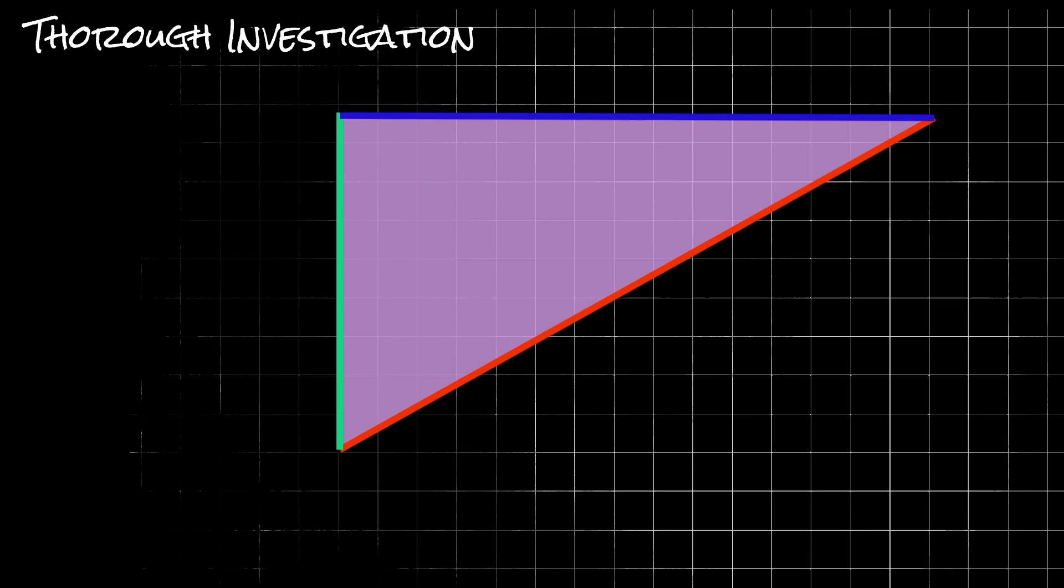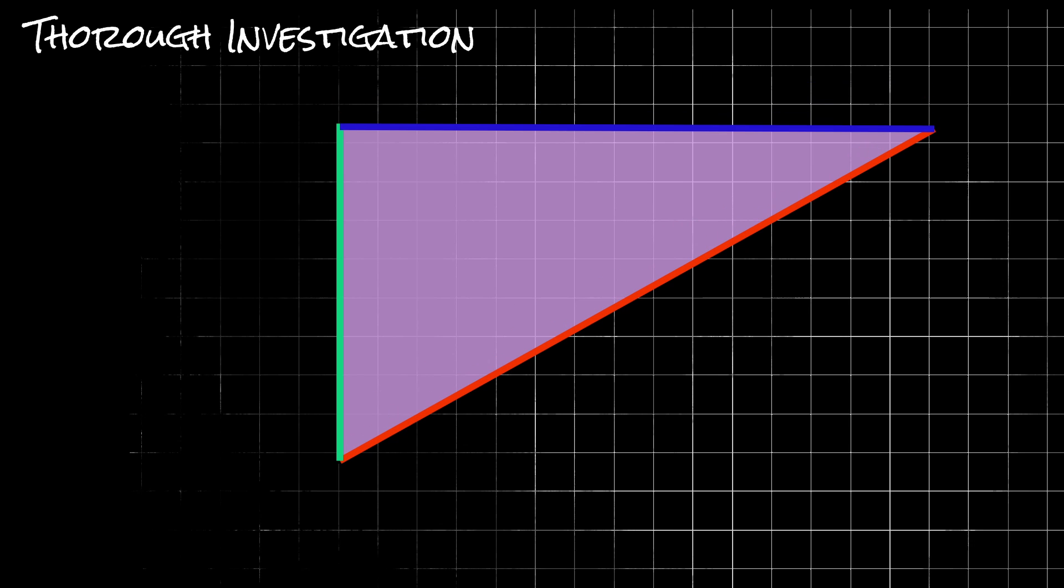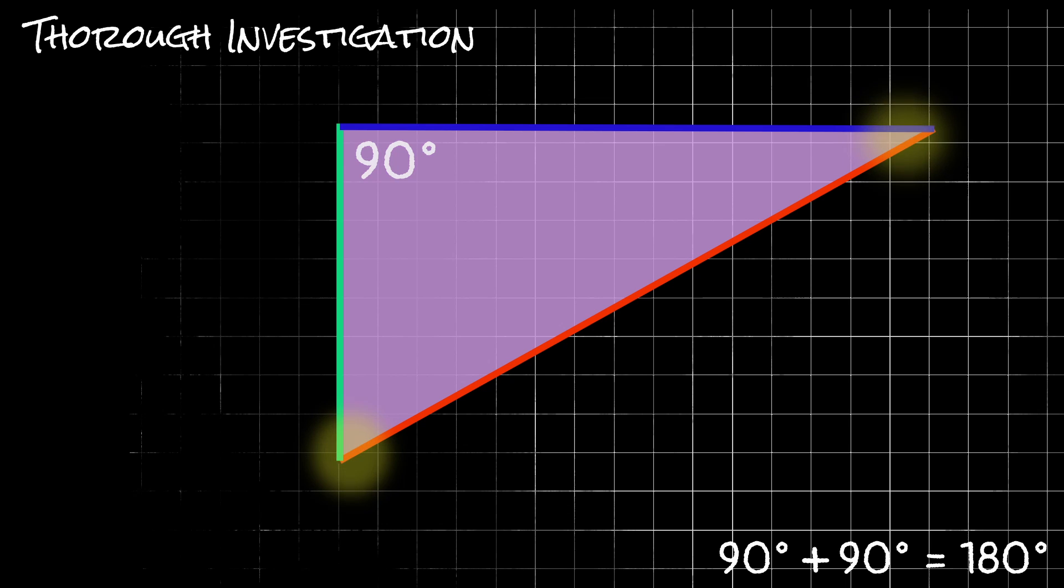Remember that all of the angles in a triangle must add up to be 180 degrees. Now, in our case, since we have a right triangle, we already know that one of those angles equals 90 degrees, so the other two angles, this smaller angle and this more medium-sized angle, must add up to equal 90 degrees.